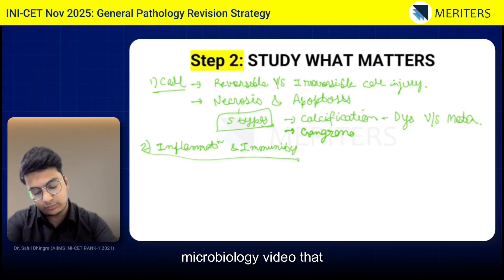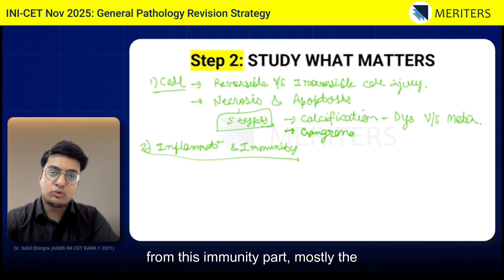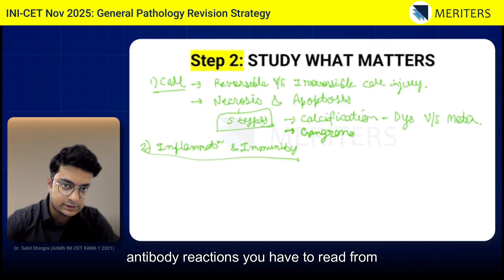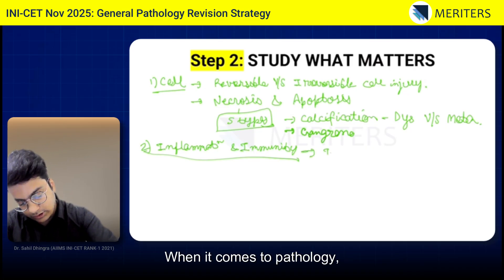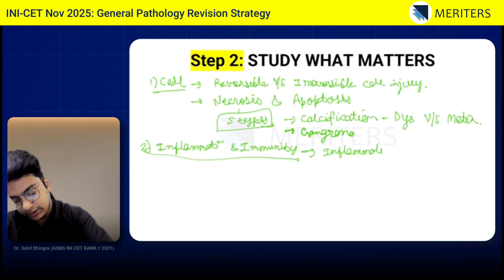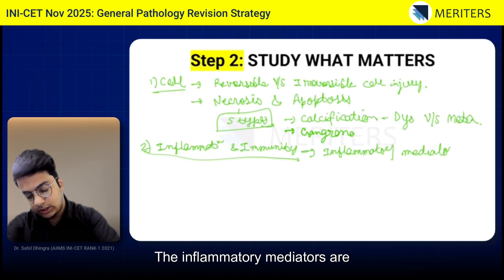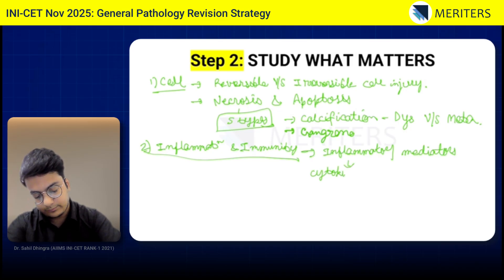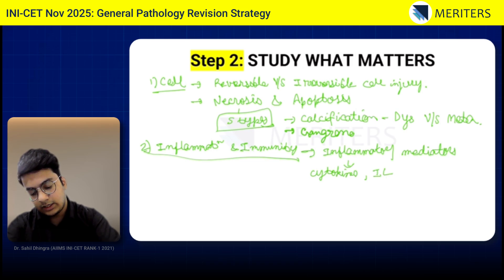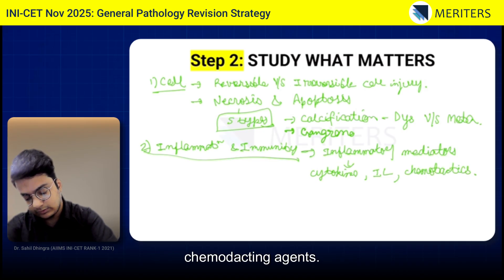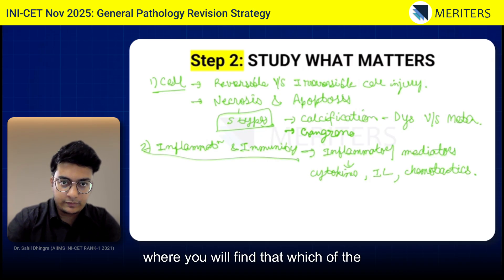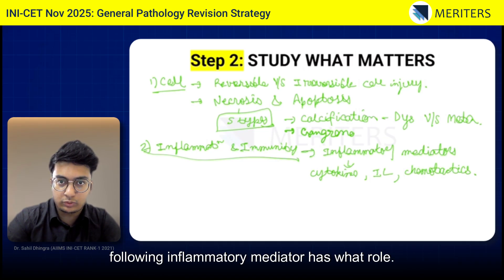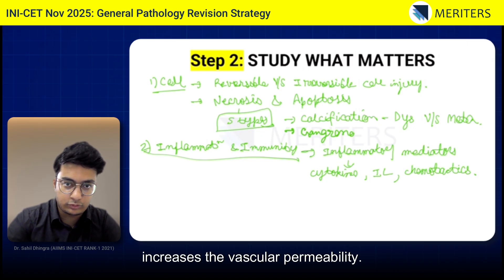As mentioned in the microbiology video, from the immunity part, mostly the hypersensitivity reactions and antigen-antibody reactions should be read from your microbiology textbooks, as they are given in much more detail there. When it comes to pathology, you have to focus on your inflammatory mediators — cytokines, interleukins like IL-1, IL-2, IL-6, and your chemo-attractants or chemotactic agents. There is one table in your textbook showing which inflammatory mediator has what role — for example, bradykinin increases vascular permeability. You have to learn that table.